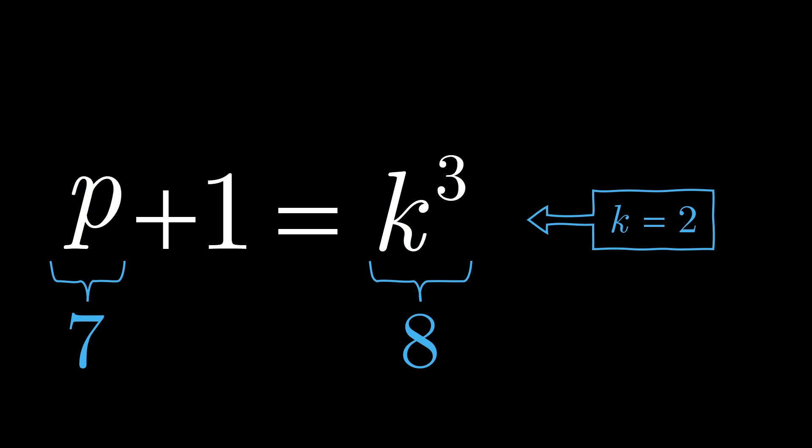And there you have it. Proof that the only case in which a prime number is immediately followed by a cube number is when the prime is 7 and the cube is 8.